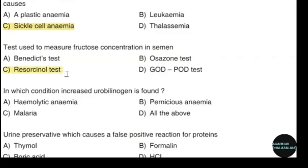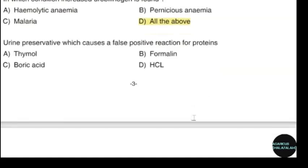Resorcinol test. In which condition is increased urobilinogen found? Correct answer: option D — All of the above. Urine preservative which causes a false positive reaction for proteins. Correct answer: option A — Thymol.